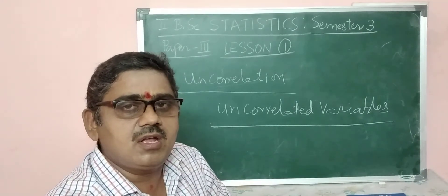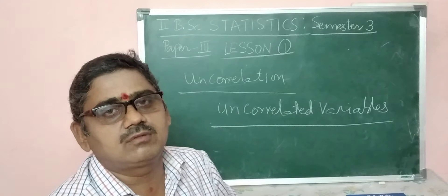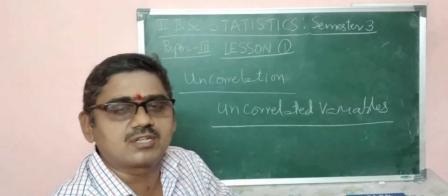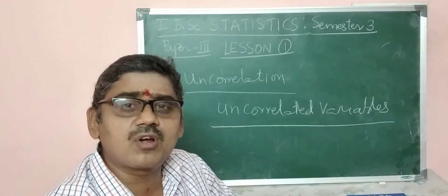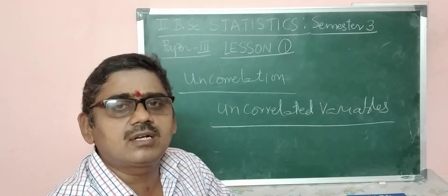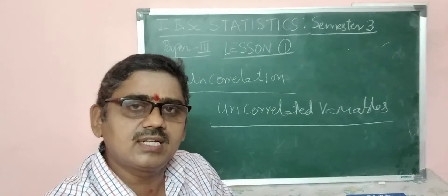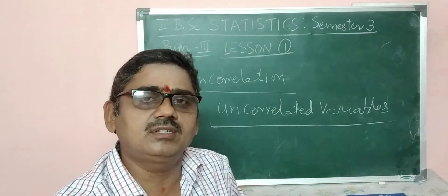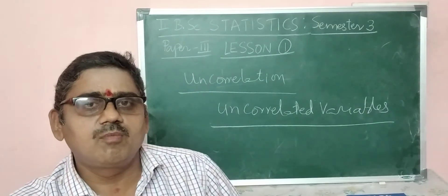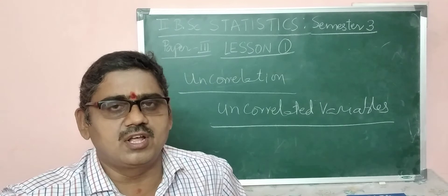So these are the types of correlation. In this lesson, we have discussed: first, correlation and its definition; second, types of correlation, in which we discussed positive correlation, negative correlation, and uncorrelated variables. This is the topic — correlation: definition and types of correlation. Hope you understand and are able to follow these concepts. Thank you.